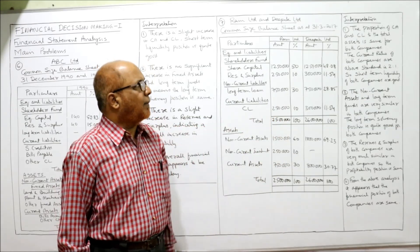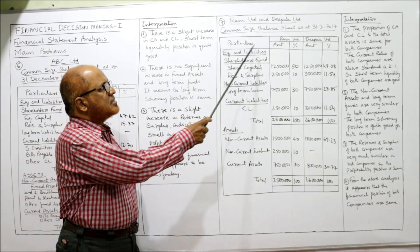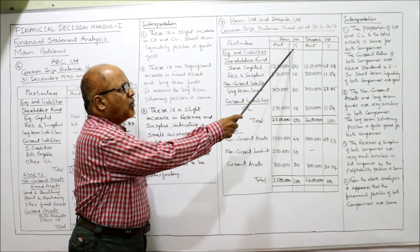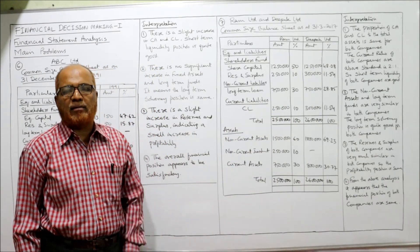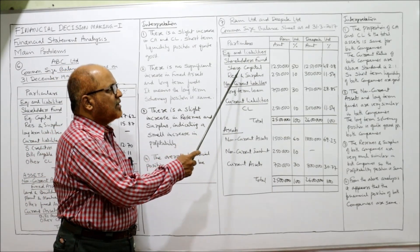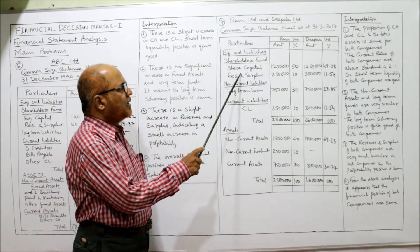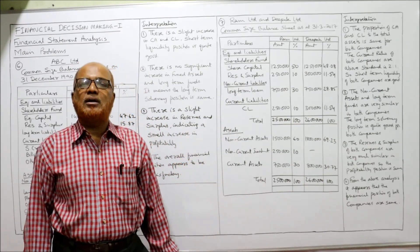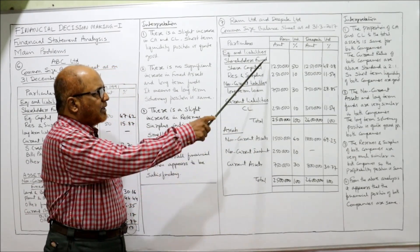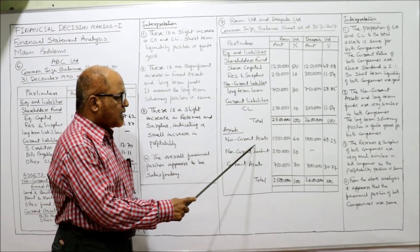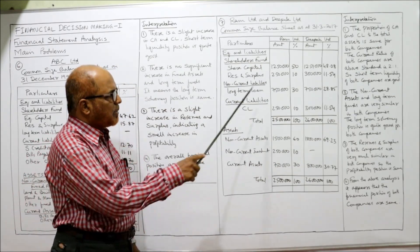The format is a vertical common size balance sheet as on 31st March 2017. Columns: Ram Limited — amount, percentage; Deepak Limited — amount, percentage. Amounts are given in the problem; percentages we have to calculate. Under equity and liabilities: shareholders' fund (share capital, reserves and surplus), non-current liability (long-term loan), and current liabilities. Then total of the liability side. Asset side: non-current assets, non-current investments, and current assets.